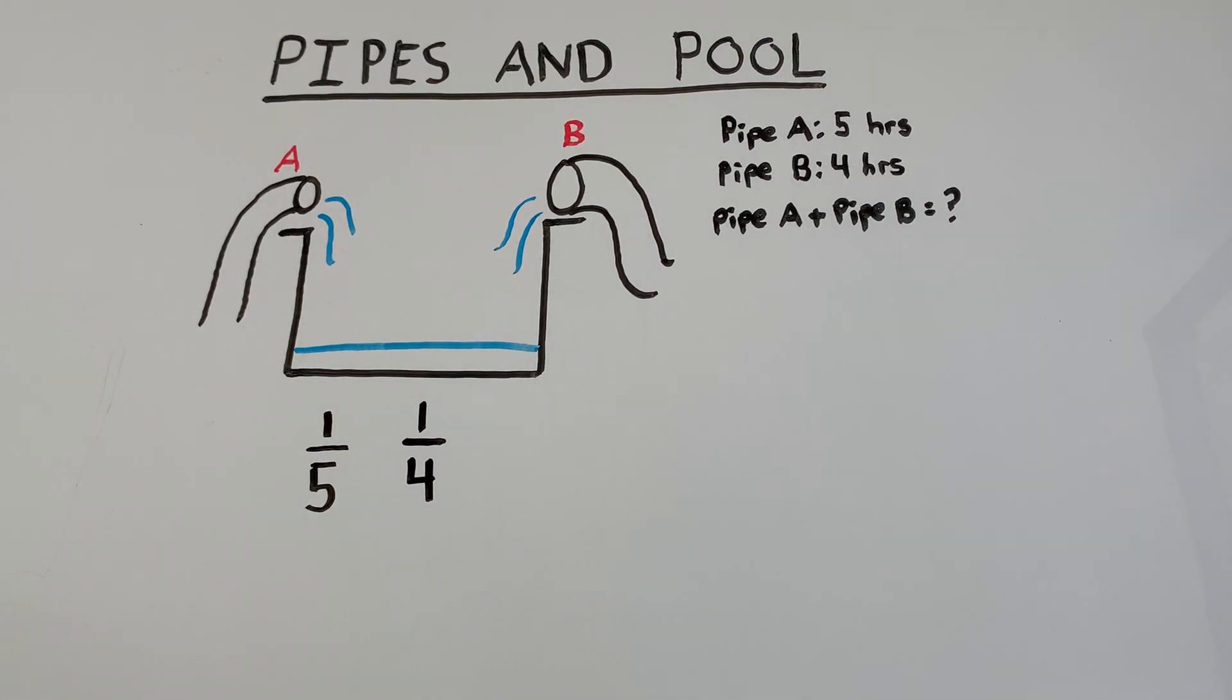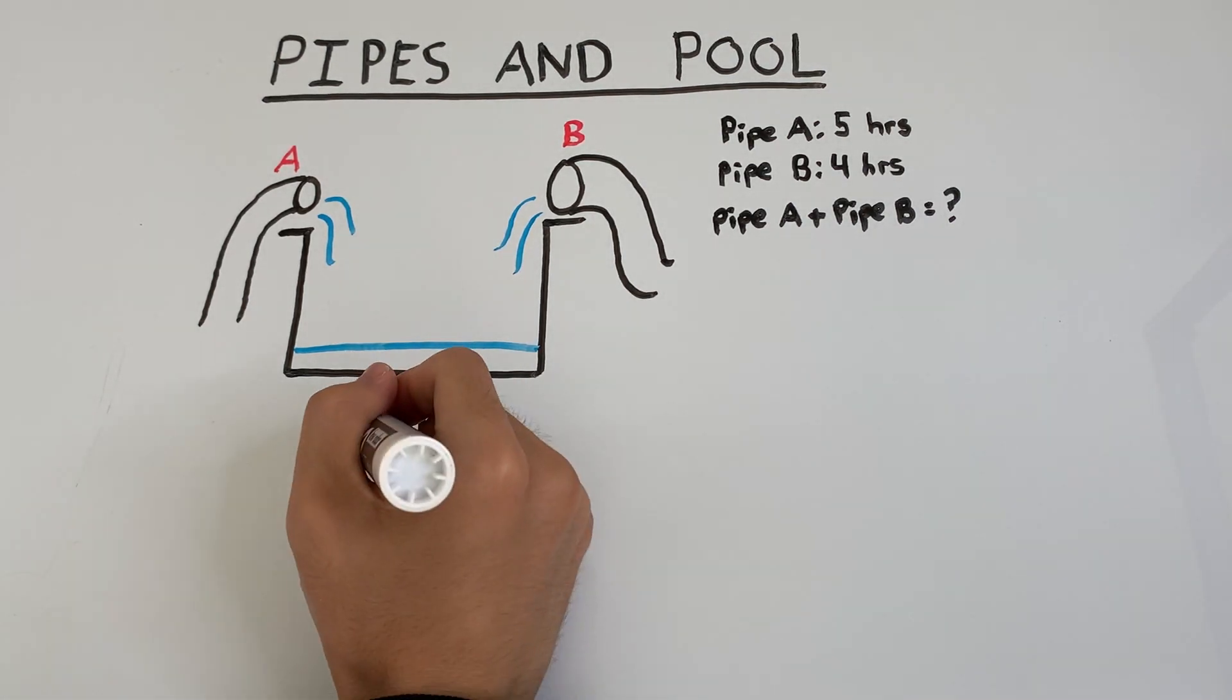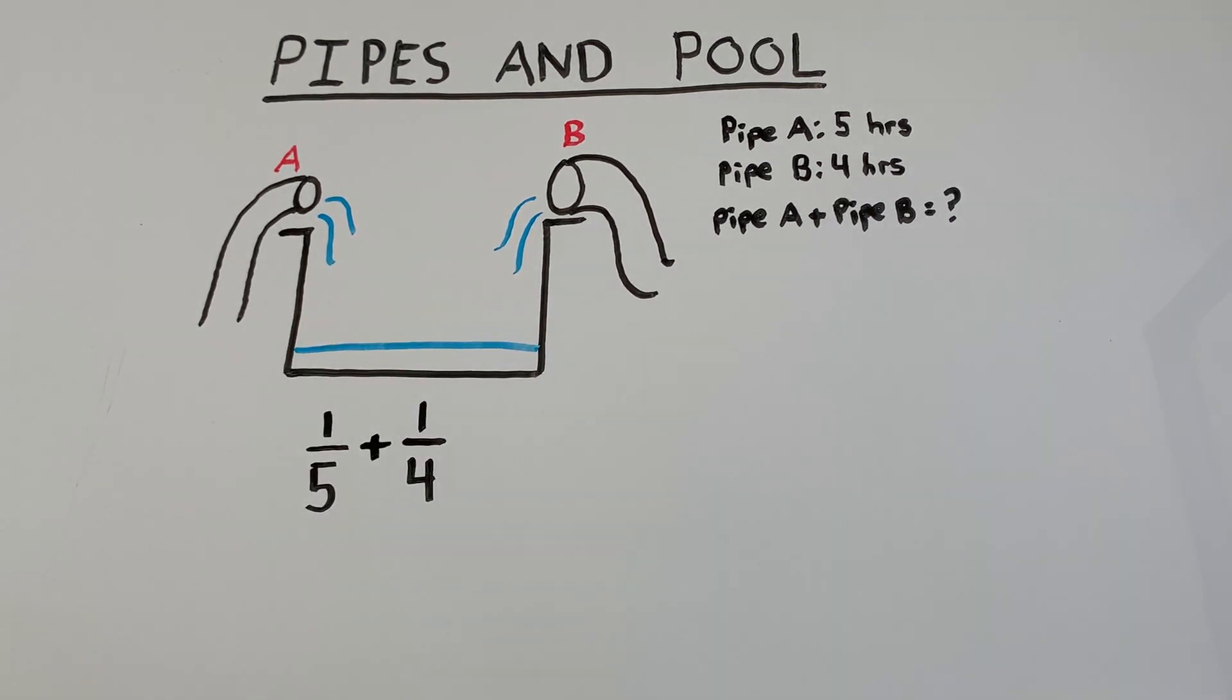So when both of them are on and working together, they're filling up the pool at a total rate of just these two rates added together. So this total is how much of the pool both pipe A and pipe B fill together in one hour.